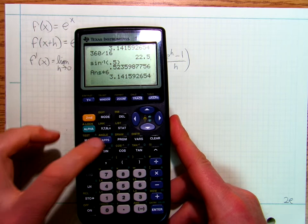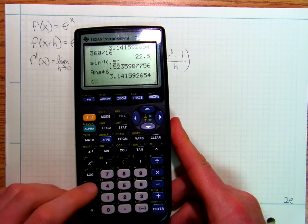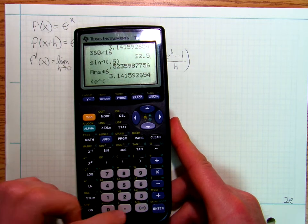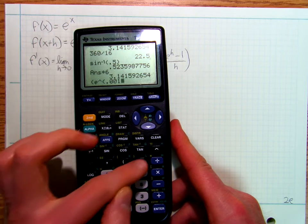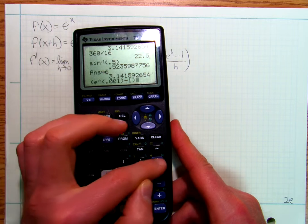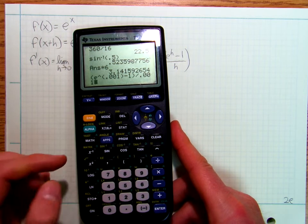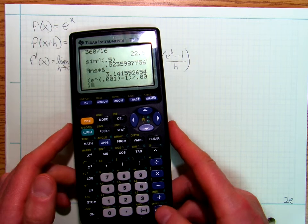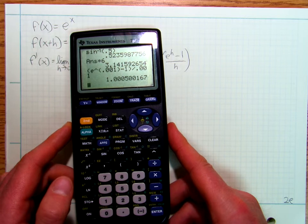So I'm going to do e, open parenthesis, e to the 0.001 minus 1, close parenthesis, divided by 0.001. So there I've made h equal to 0.001, and I get a number really, really close. I get 1.00500.